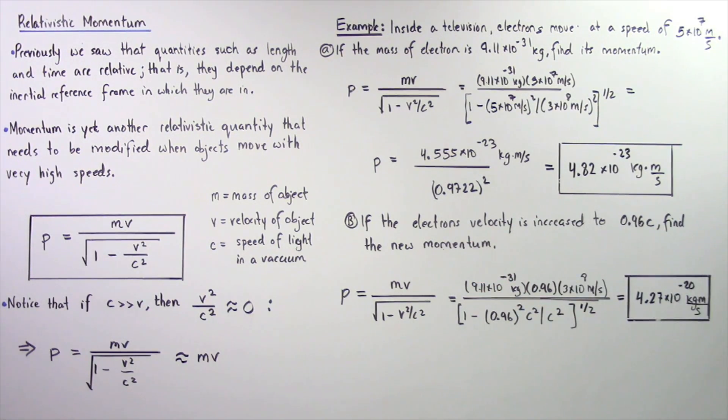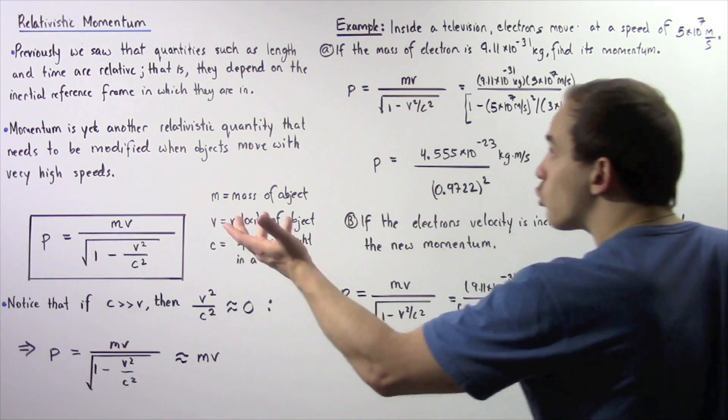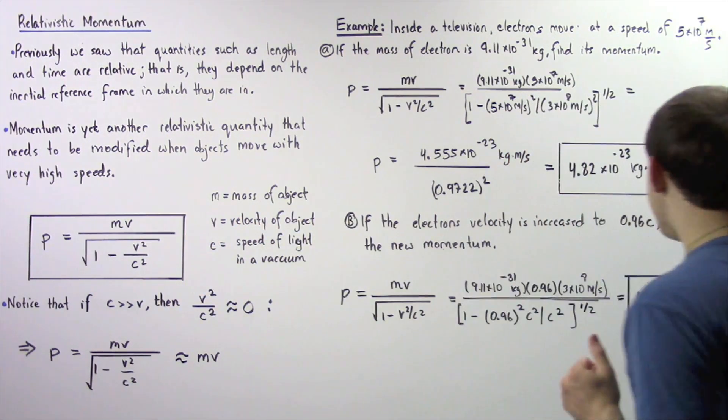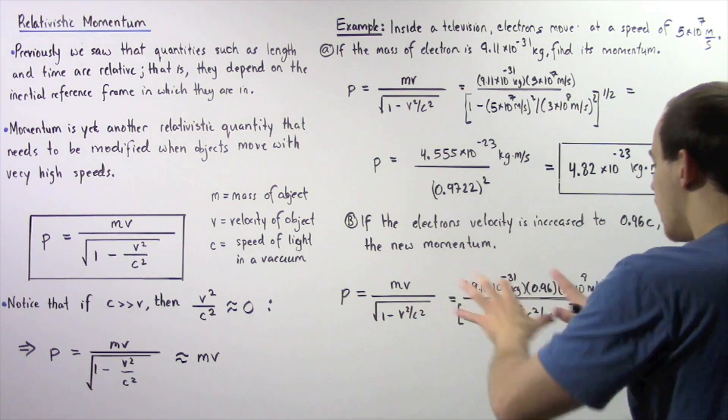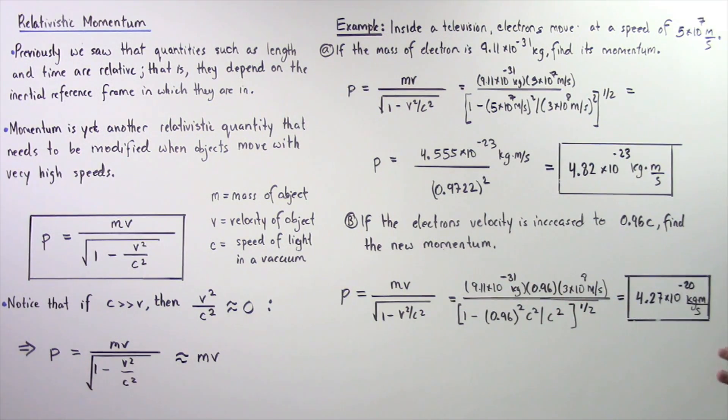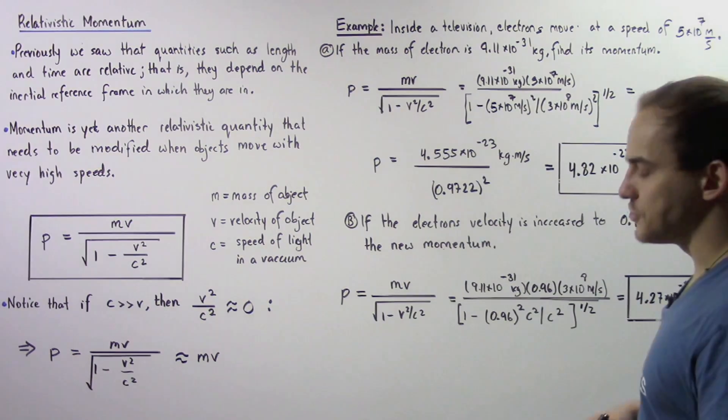Once again, we use our relativistic momentum equation because the velocity is very high. We plug in our values and we see that the momentum of this electron is about 4.27 times 10 to the negative 22 kilograms multiplied by meters divided by seconds.